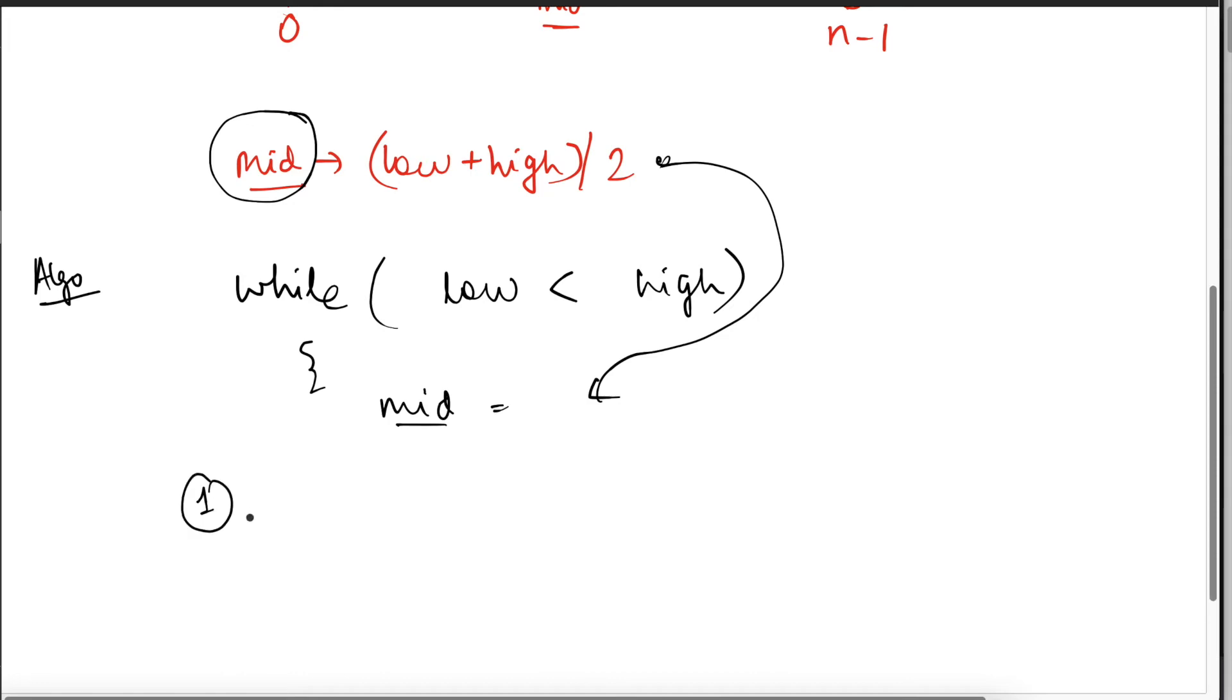So after doing this, then we do three things. Number one, we check if the array of mid means this value at the mid. If this is exactly equal to what we were looking for, might happen that the element we were looking for is actually we have found at exactly the middle position of the array only. If that is the case, what we should return? We have to return the index. What is the index? Mid is the index. We will return mid.